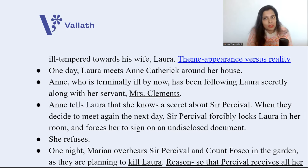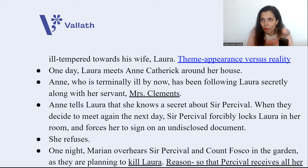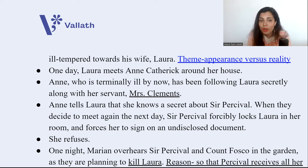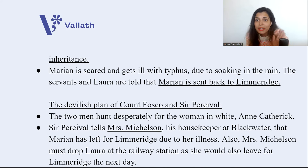Anne follows Laura with her servant Mrs. Clements and tells Laura she knows a secret about Sir Percival, but they cannot talk just then. They decide to meet the next day. Sir Percival comes to know about this and quickly locks Laura in her room, forcing her to sign an undisclosed document — essentially allowing Sir Percival to use those £20,000. Laura refuses to sign. After this, Count Fosco and Sir Percival start plotting something. One night, Marianne overhears them talking in the garden — they are planning to kill Laura so that Percival receives all her inheritance.